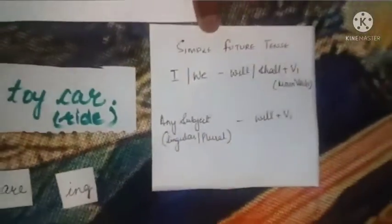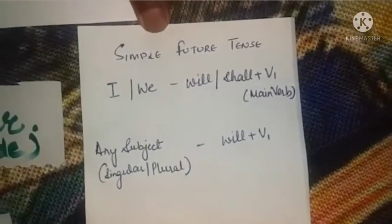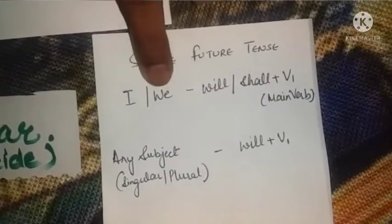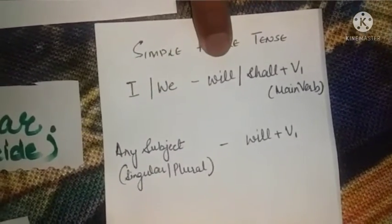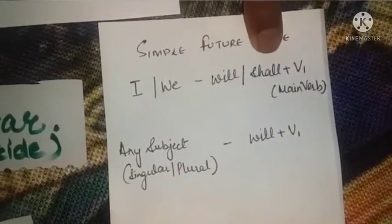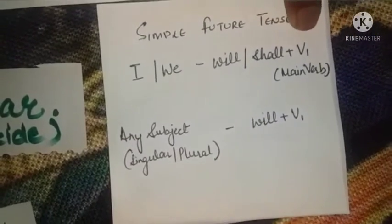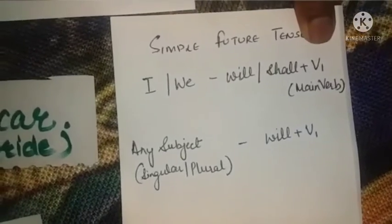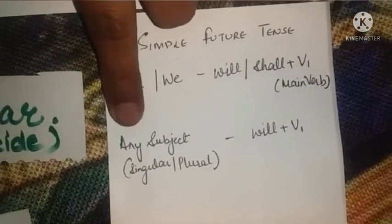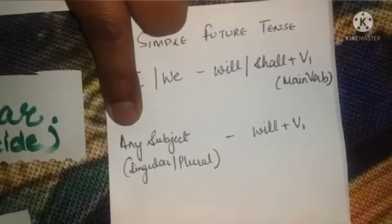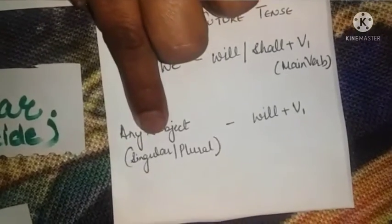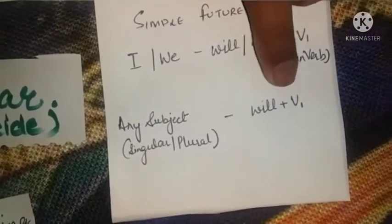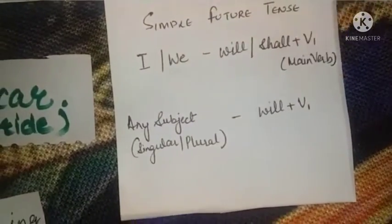Isi tarah beta, simple future tense mein — I aur we ke saath will ya shall use kar sakte hain aur uske saath add karte hain verb 1 yaani main verb. I aur we ke ilawa koi bhi subject ho — chahe singular ho ya plural ho — hum will ke saath verb 1 add karte hain.